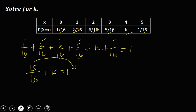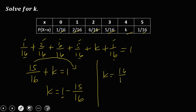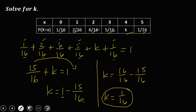Then transpose: 2K equals 1 minus 15 over 16. We can write 1 as 16 over 16 to make the denominators equal. So 2K equals 1 over 16, and therefore K equals 1 over 16. This is now the value of K.